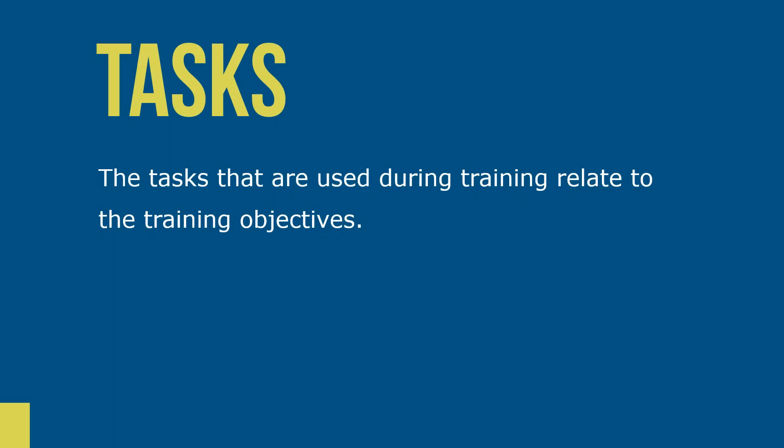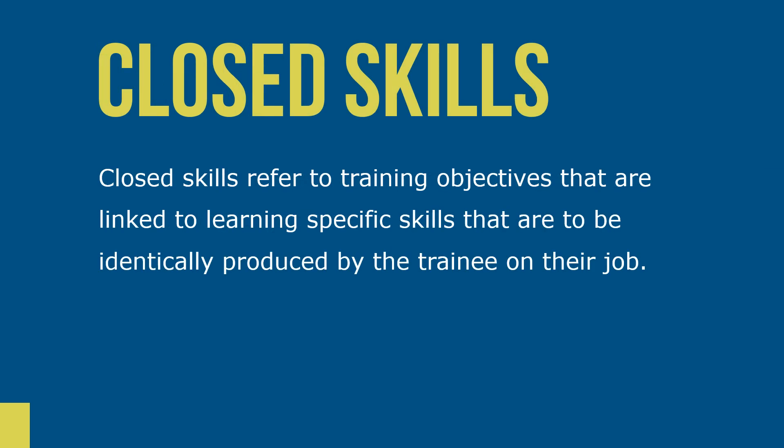The tasks that are used during training relate to training objectives. Closed skills refer to training objectives that are linked to learning specific skills that are to be identically produced on the job. There is only one correct way to complete a task if it requires closed skills.